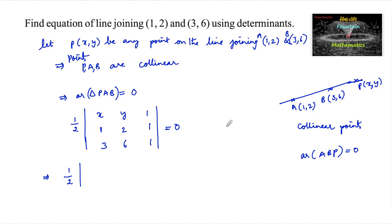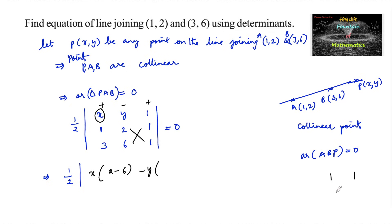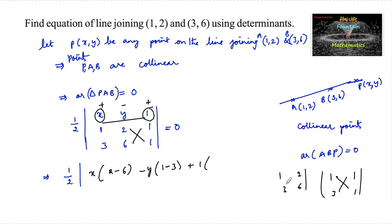Expanding along the first row: x times the determinant of (2,1; 6,1), which is 2×1 minus 6×1 = 2 minus 6; minus y times the determinant of (1,1; 3,1), which is 1×1 minus 3×1 = 1 minus 3; plus 1 times the determinant of (1,2; 3,6), which is 1×6 minus 2×3 = 6 minus 6.